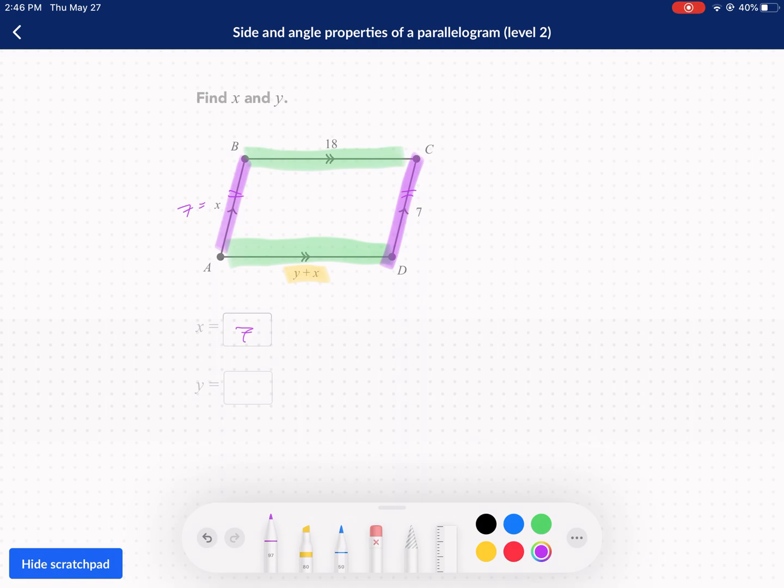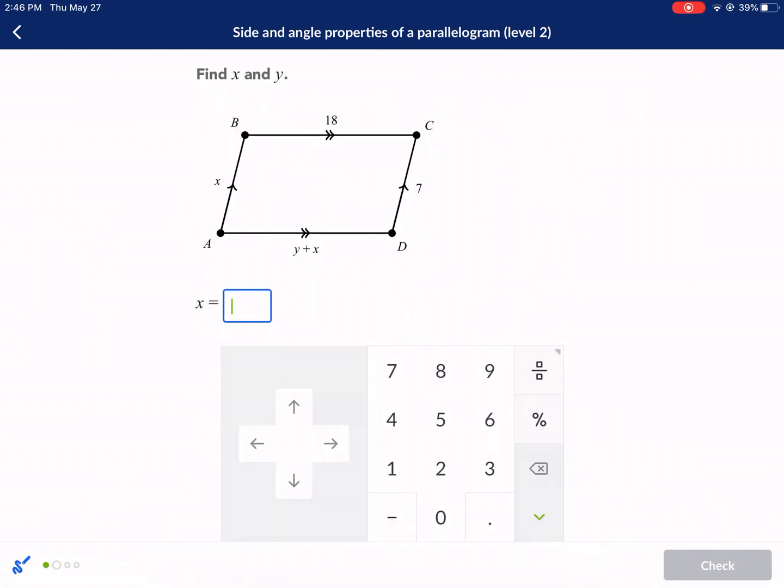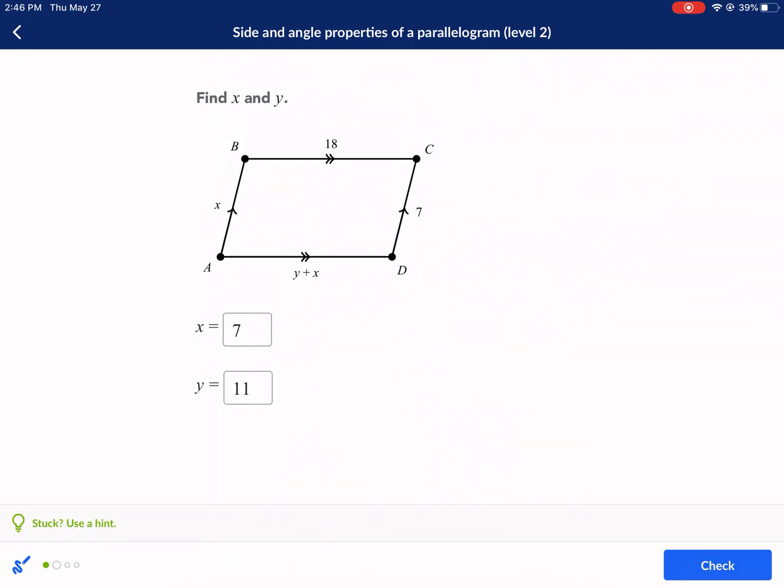Now, if x is seven, we can replace this value right here and say that it is y plus seven. And we know that's equal to its opposite side, which needs to equal 18. Therefore, we just subtract seven from both sides and we get y equals 11. So 7, 11. They probably did that on purpose. Just knowing Khan, he's a comedic guy, that Khan, 711. There we go. And check it. Next question.